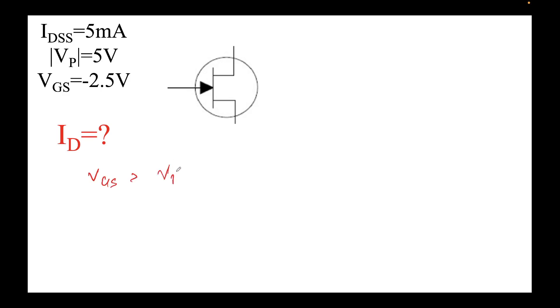You can clearly see that VGS is greater than VP, because VGS is minus 2.5 and VP is minus 5. This means the device will conduct because it's not been stopped.